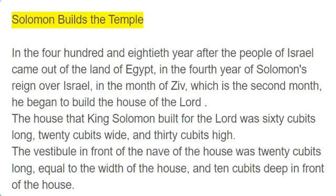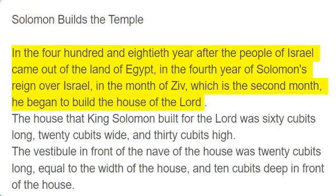Solomon builds the temple. In the 480th year after the people of Israel came out of the land of Egypt, in the fourth year of Solomon's reign over Israel, in the month of Ziv, which is the second month, he began to build the house of the Lord.